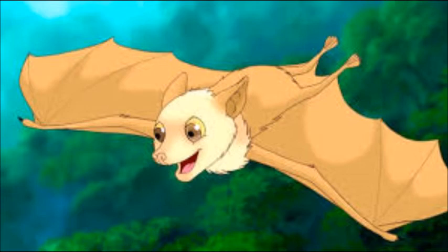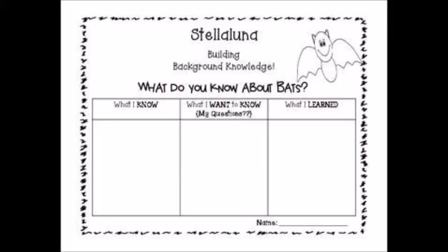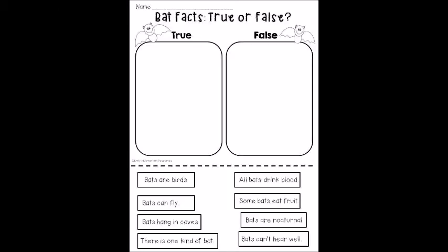Once you're done reading the book, you can do this worksheet — 'What Do You Know About Bats?' — covering what they know, what they've learned, and what they want to know. There's also a true and false worksheet you can do, covering what is true about bats and what is false about bats.